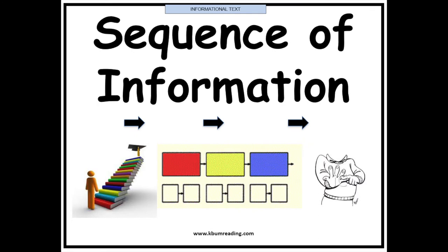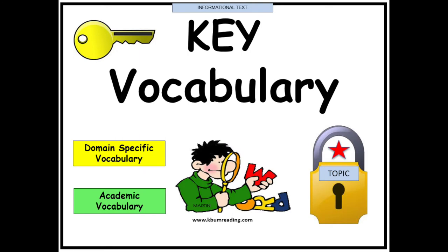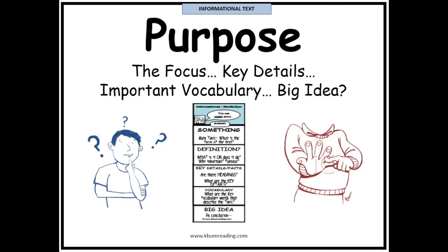We also have a sequence of information. Now, informational texts can be read out of order; however, there is still a sequence of information of how it's presented to you — for example, if it's telling you how to do something or, in this case, how a tadpole changes over time to become a frog. There's also going to be key vocabulary. We're also going to see the purpose behind writing the text: what is the focus, the key details, important vocabulary, and the big idea.